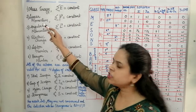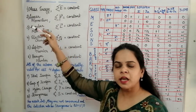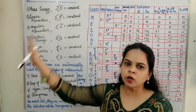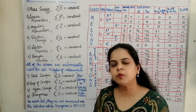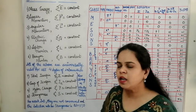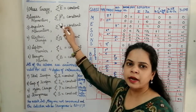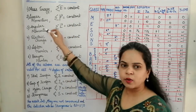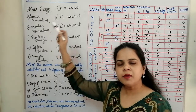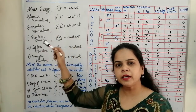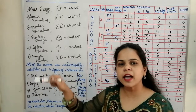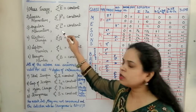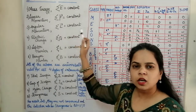For the second conservation law — linear momentum — the sum of linear momentum on the reactant side must equal the sum on the product side, so the summation of linear momentum is constant. Next, angular momentum conservation states that the sum of angular momentum of the reactants must equal the sum on the product side — the summation of angular momentum is constant.